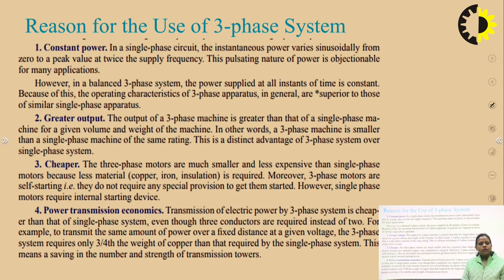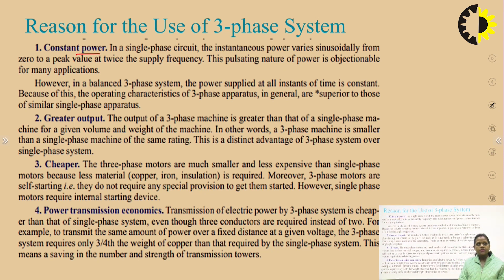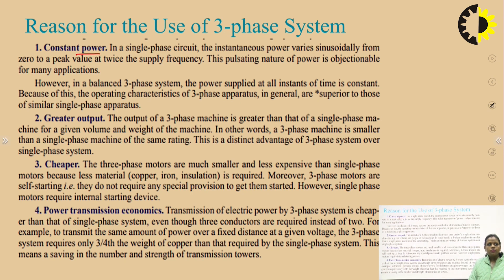The three-phase system has several advantages. The first is constant power. In a single-phase circuit, the instantaneous power varies from 0 to peak value at twice the supply frequency, and this pulsating nature of power is objectionable for many applications. However, in a balanced three-phase system, the power supplied at all instants of time is constant, making the operating characteristics of three-phase apparatus superior to similar single-phase apparatus.